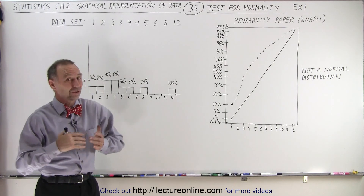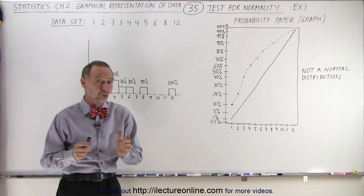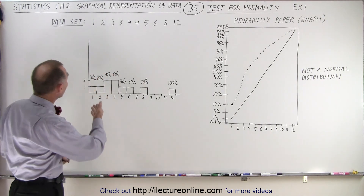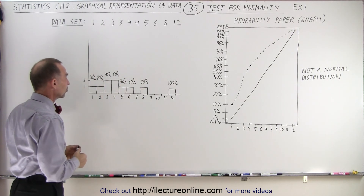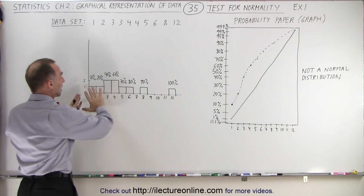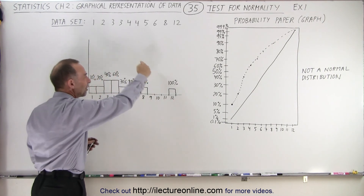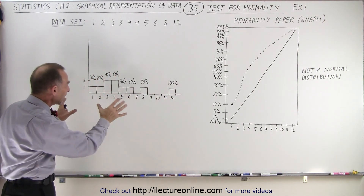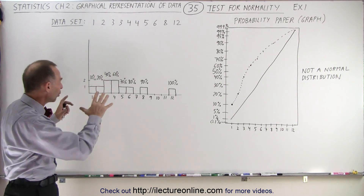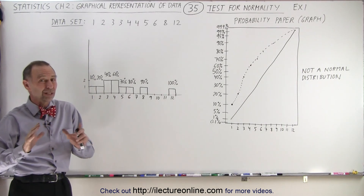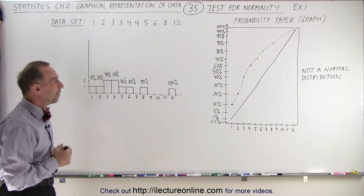Quite often you can just look at the distribution graph, the frequency graph, or a bar graph and say, well, that doesn't look like a normal distribution. Case in point, here we have a data set of 10 points. If we do a frequency distribution graph, notice that it tends to be heavy on the small side and very light on the heavy side. You don't have your typical bell curve distribution, so you wouldn't think this data has a normal distribution — it's not anywhere near a nice normal distribution. So what we can do is perform what we call a test for normality.